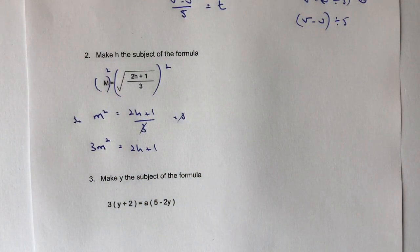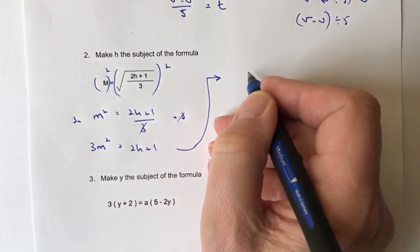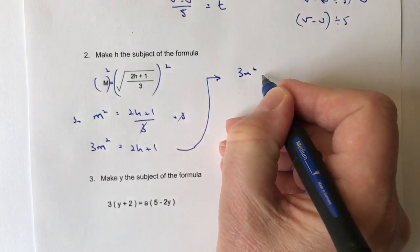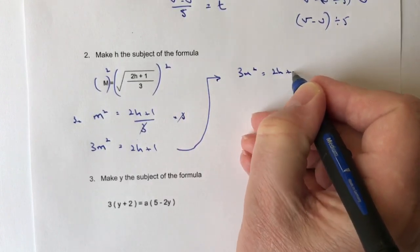OK, so we're getting a little bit closer now. What I'm going to do, just for the sake of space, is rewrite this again at the top here: 3m squared equals 2h plus 1.